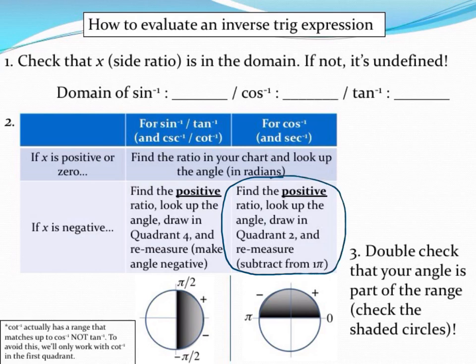The reason we save this for a separate video is if you check out these shaded circles, inverse cosine has a very different shaded section. This time, we're looking at the top half of the circle, the first quadrant and the second quadrant. If our side ratio is positive, we'd end up in quadrant one where all things are positive. But if our side ratio is negative, which these examples will be, we're actually going to end up in quadrant two, which is not where we ended up with inverse sine and inverse tangent. So let's go ahead and take a look at how that will work.